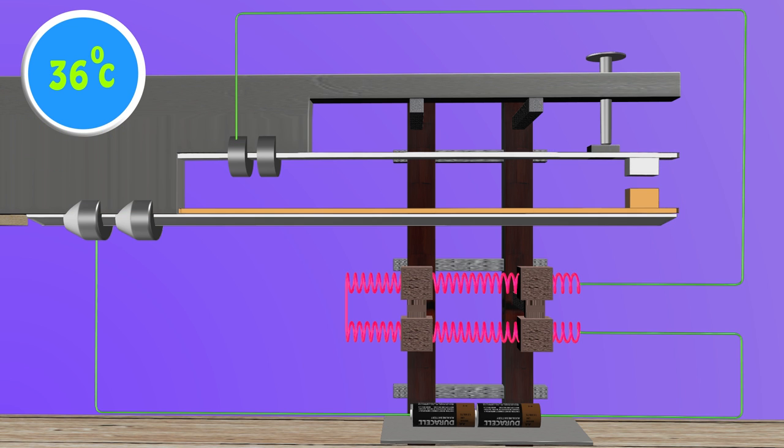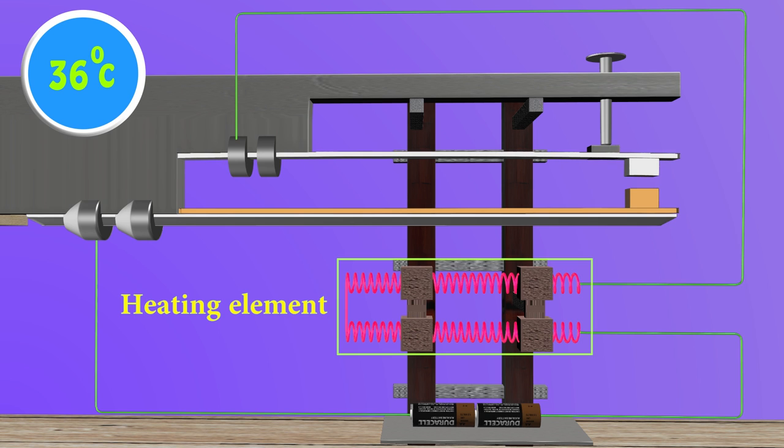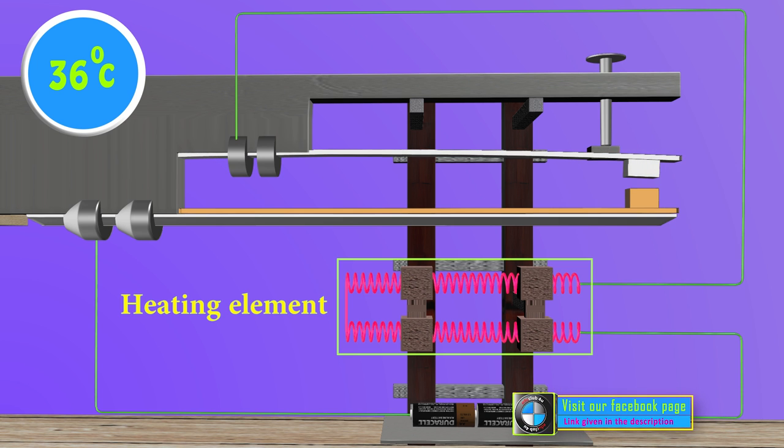A heating element is connected with the bimetallic strip at its one end. The other end of heating element and steel spring is connected to a DC battery source with the help of wires and connectors.